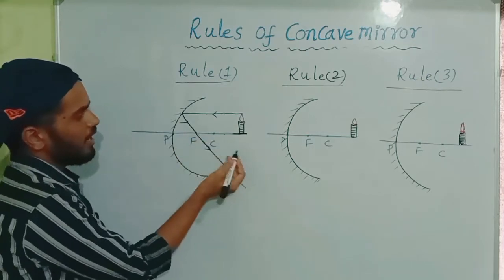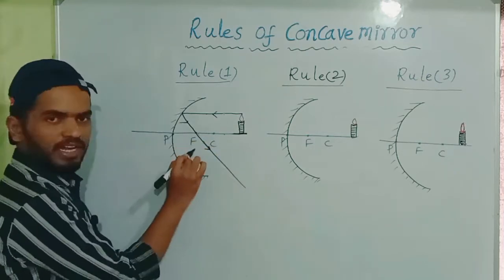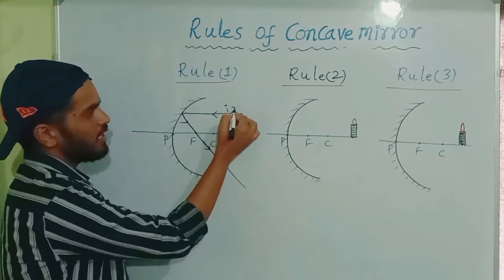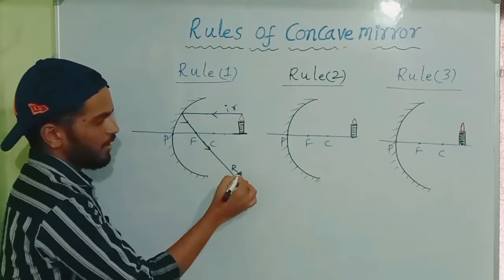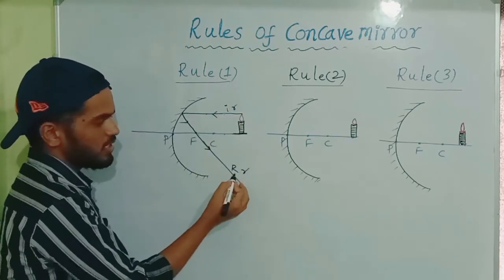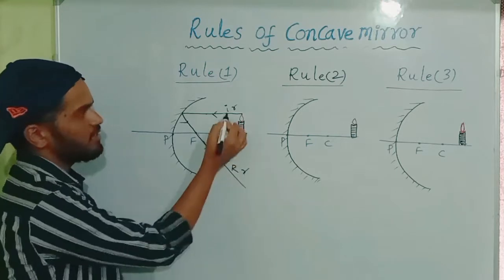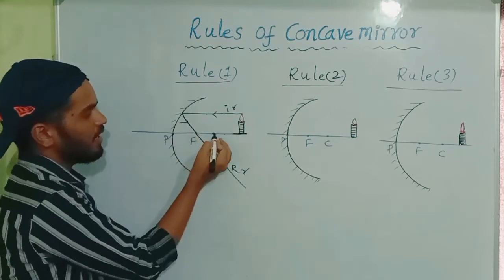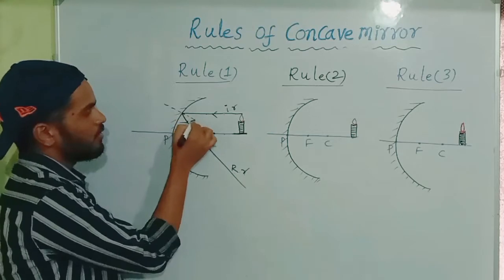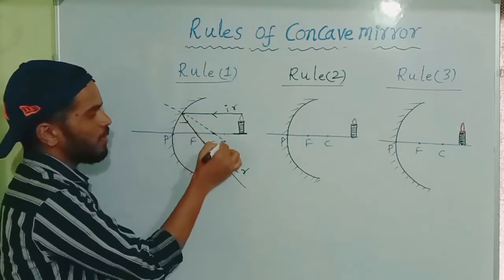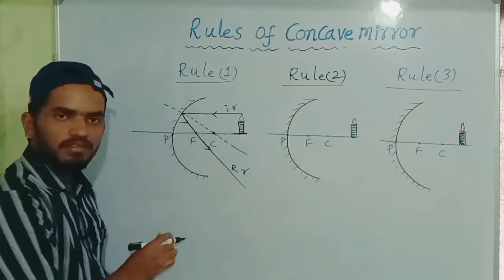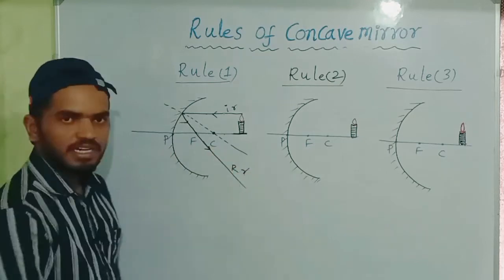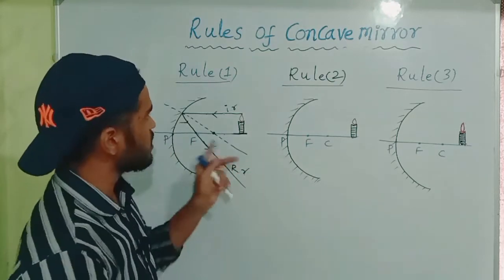We can draw the normal between the incident ray and the reflected ray. The normal passes through the center of curvature. This is Rule 1.